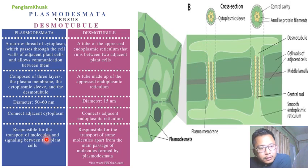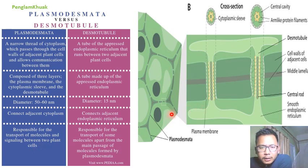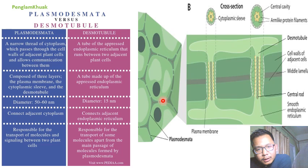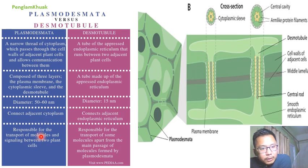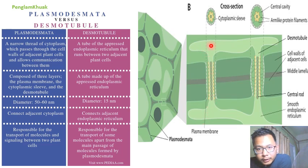Another function: plasmodesmata are responsible for transport of molecules and signaling between two plant cells. For example, if a cell gets infected by a microorganism, it can inform adjacent cells via plasmodesmata, and those neighboring cells can release chemicals, block passages, or kill the invading microorganism. In case of desmotubules, some small molecules — including fat molecules or very small microscopic molecules — are also transported.